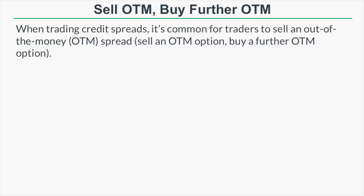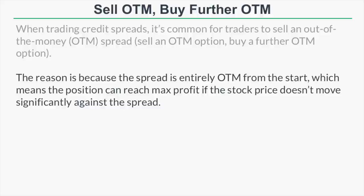The first common method traders use when trading credit spreads is to sell an out-of-the-money spread — meaning you sell an out-of-the-money option and then buy a further out-of-the-money option to complete your credit spread. The reason traders use this structure so often is because the spread is entirely out-of-the-money from the start, so the position can reach maximum profit potential if the stock price doesn't move significantly against the spread.